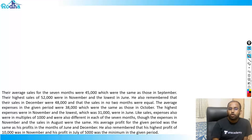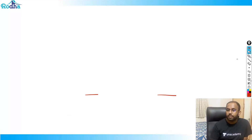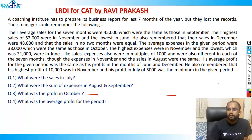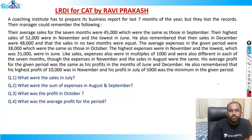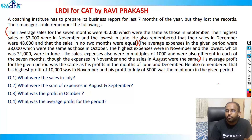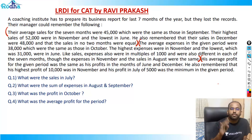This set talks about a coaching institute that had to prepare its business report for the last seven months of the year but they lost the records. Their manager could remember the following. The average sales for the seven months were 45,000, which were the same as those in September. This data is basically in three parts: sales, expense, and profit.